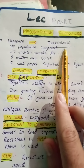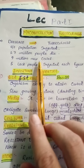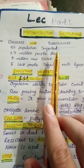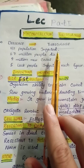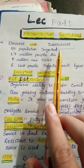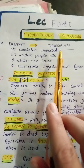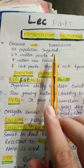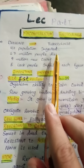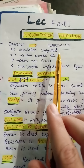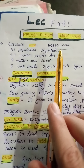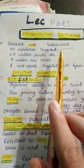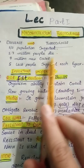Each year it is estimated that 1.7 million people die of tuberculosis and that 9.9 million new cases occur. An estimated five million people are infected with a multi-drug resistant strain of Mycobacterium tuberculosis.